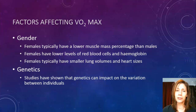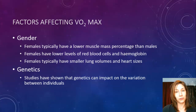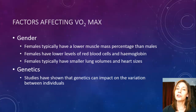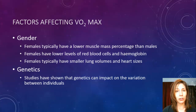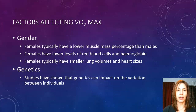So gender: females typically have a lower muscle mass just because of genetics, so therefore if there's less muscle mass they're going to take up less oxygen and their VO2max will be less than males generally. Females also usually have lower levels of red blood cells and haemoglobin, meaning their capacity to actually carry the oxygen is lower, and therefore again affecting the VO2max.